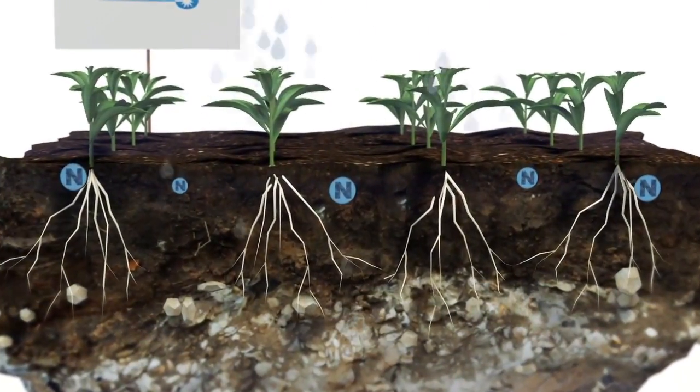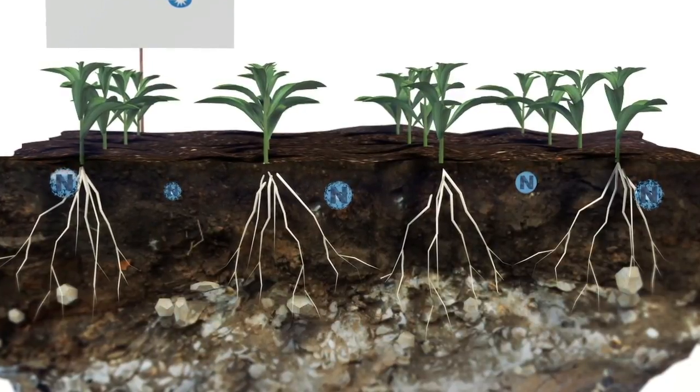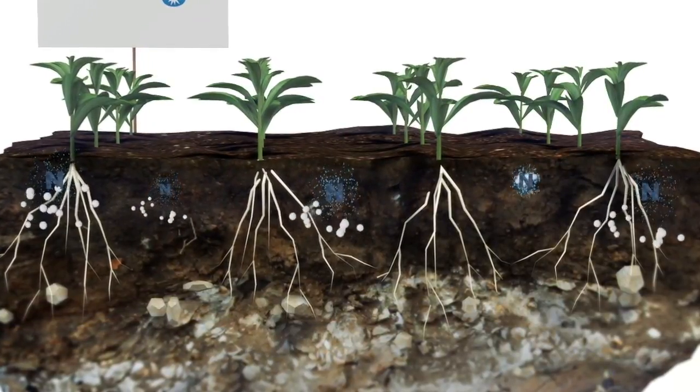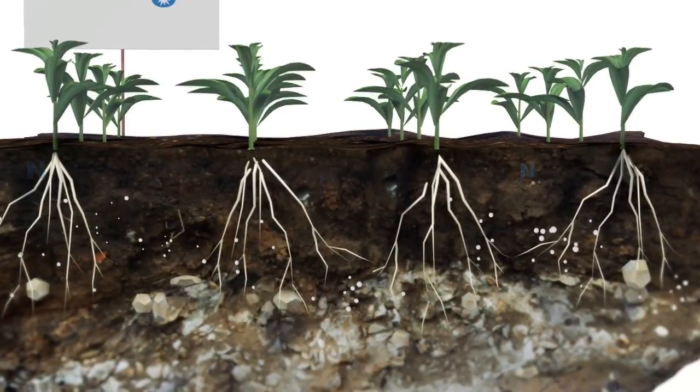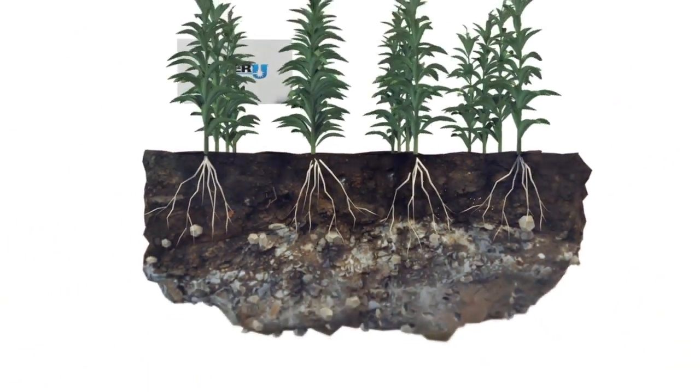Made with both urease and nitrification inhibitors, Super U fertilizer allows time for nitrogen to move into the root zone. As your crops receive more nitrogen, the advantages are easy to see.